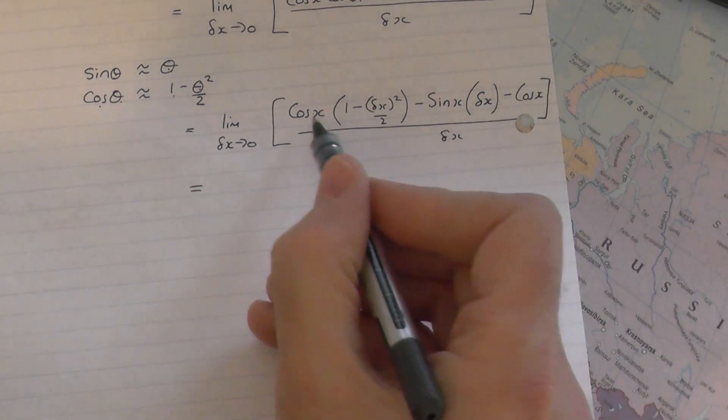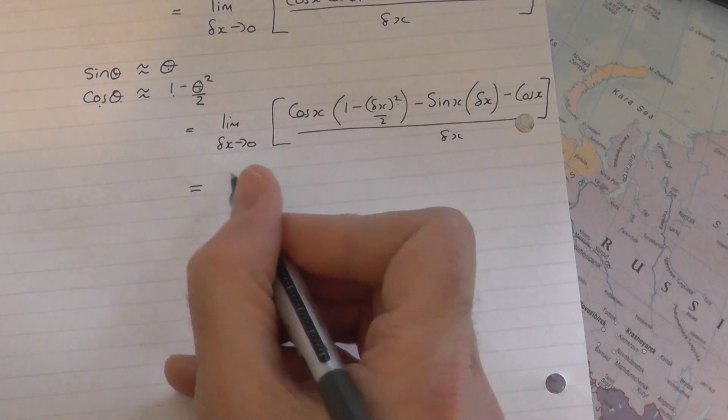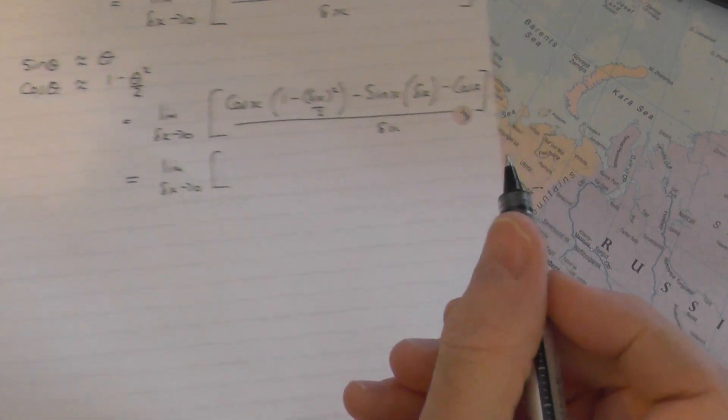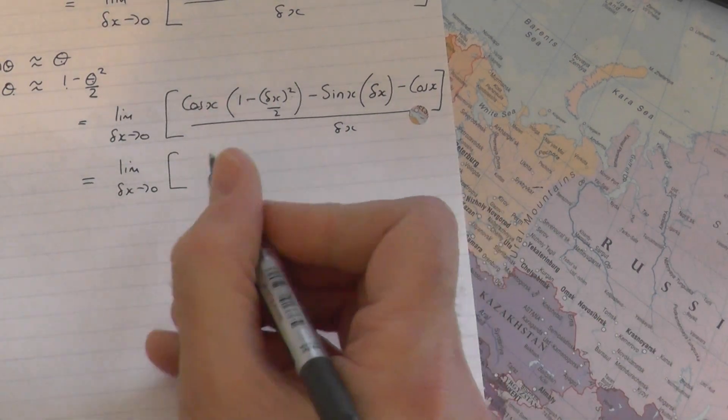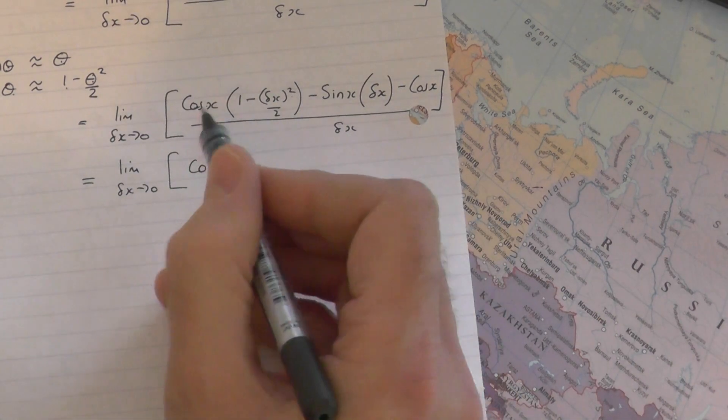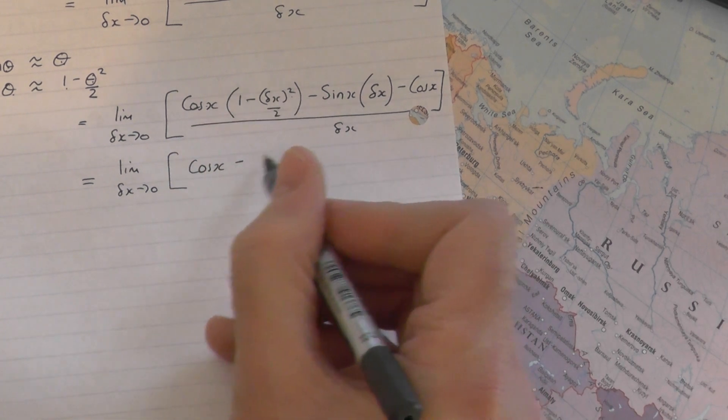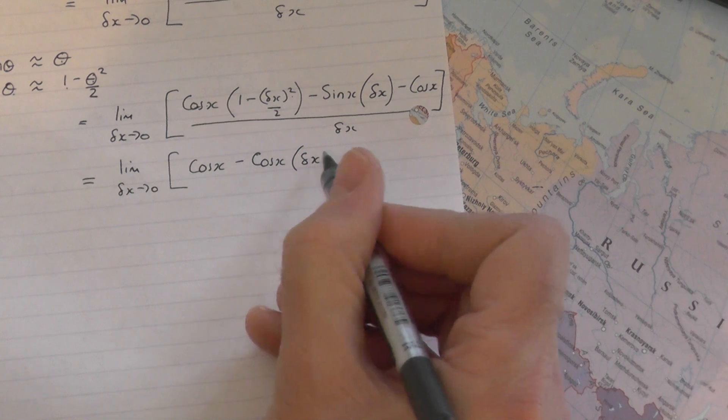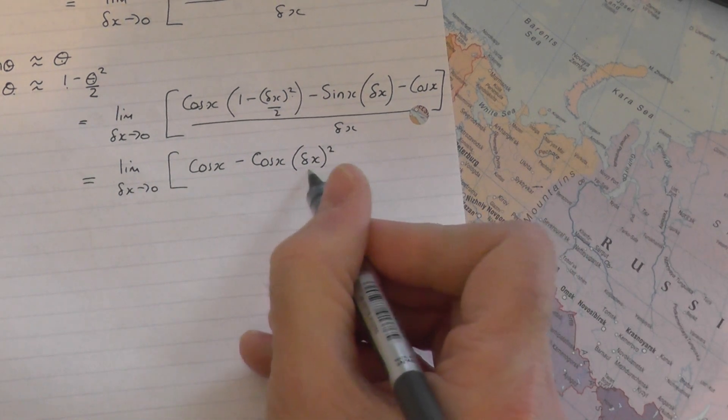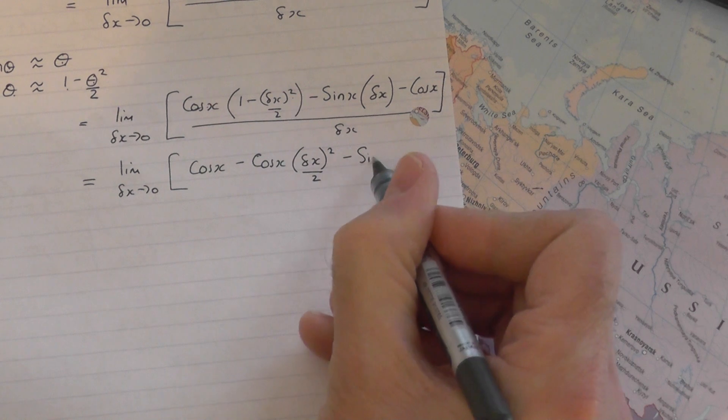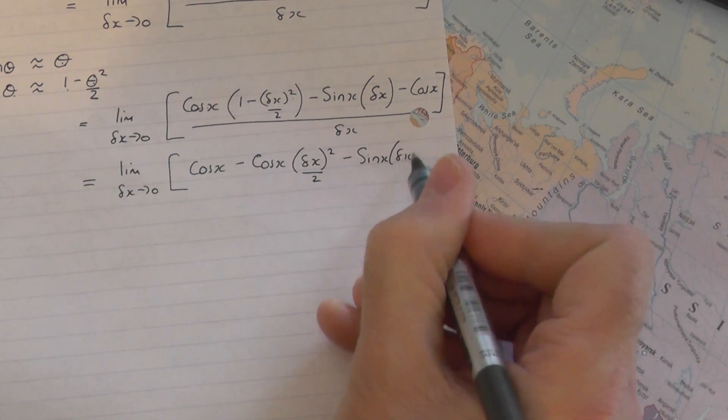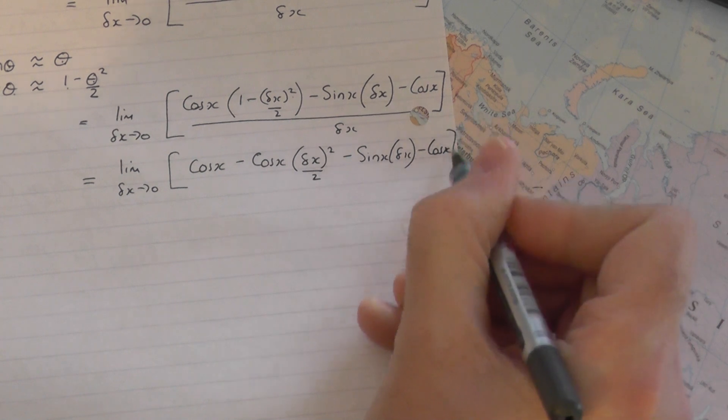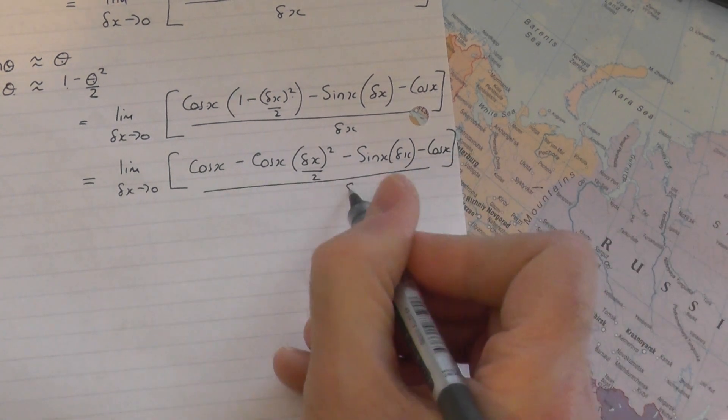So what we're going to do now is just expand this bracket out, so you're going to get lim delta x tend to 0 of, expanding this bracket out, cos x times 1 is cos x, that times that is minus cos x multiplied by delta x squared over 2, minus the sine x times delta x, don't forget minus cos x still at the end, very important, all divided by delta x.